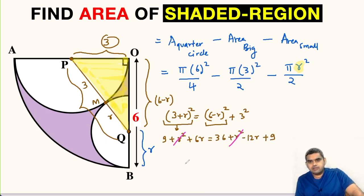r² and r² will get cancelled. Likewise 9 and 9 can be cancelled. This 12r can be shifted on LHS, so 12r + 6r will be 18r = 36. So r will be 36 divided by 18, that is 2.